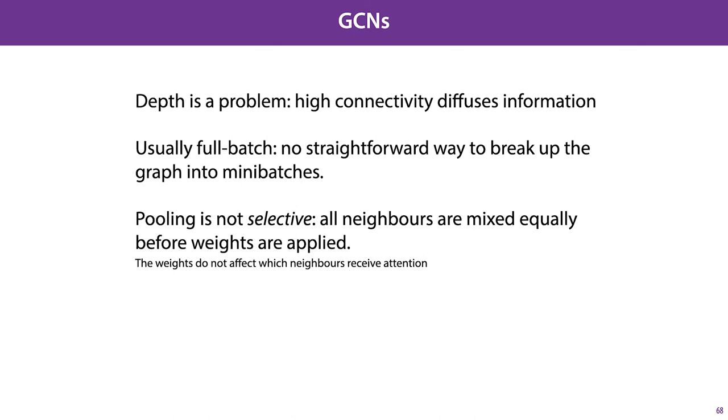We should note that depth here is a problem. We usually cannot train these networks for more than two layers. High connectivity diffuses the information too much. They usually need to be trained full batch. There is no straightforward way to break up the graph into mini-batches. And there is no way to make the pooling selective. In image convolutions, each neighboring pixel receives a different weight. Here, that is not the case. All neighbors are mixed equally before the weights are applied, and the weights do not affect which of the neighbors receive attention.